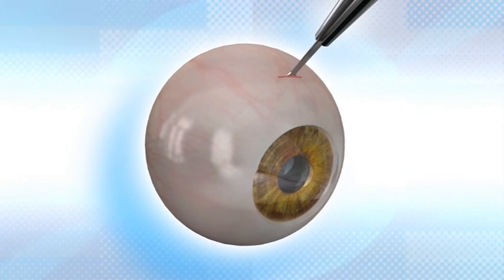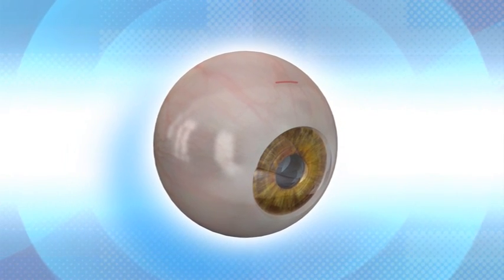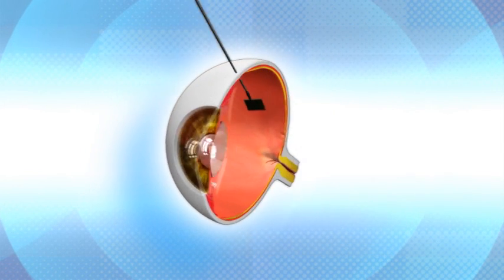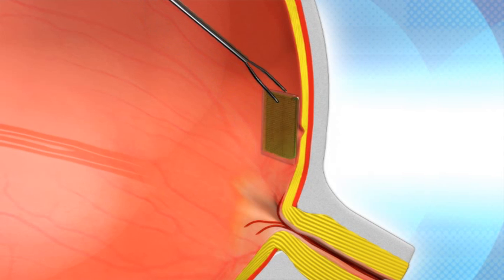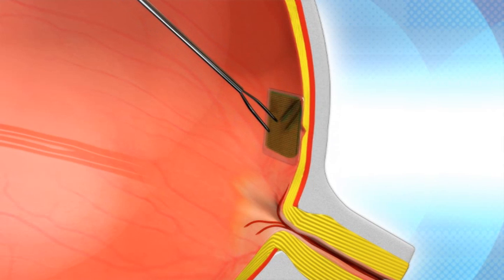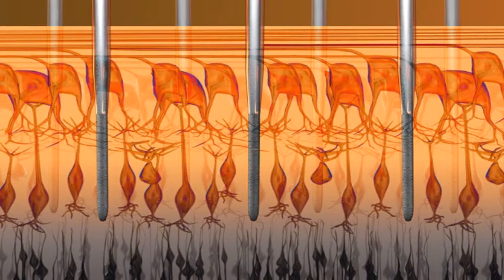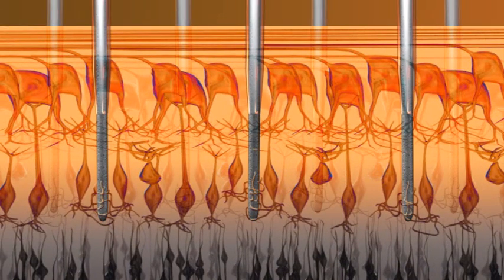The NanoRetina implant is inserted into the eye in a minimally invasive procedure involving local anesthesia and lasting less than 30 minutes. The implant is attached to the retina, and the implant's electrodes interface with the eye's bipolar neurons.